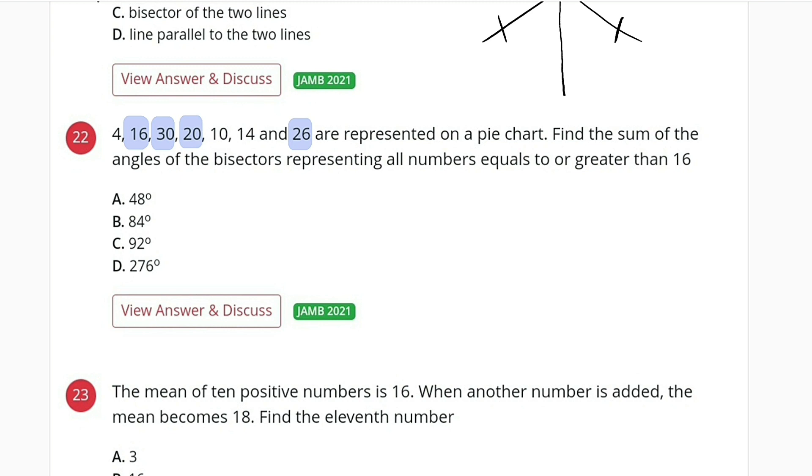But that's great work. First of all, let us find the sum of all these numbers together. If we sum them, we have 4 plus 16 plus 30 plus 20 plus 10.